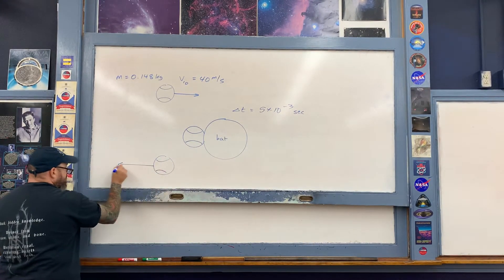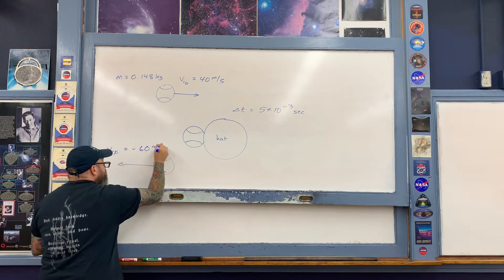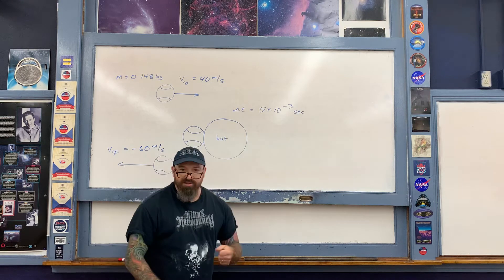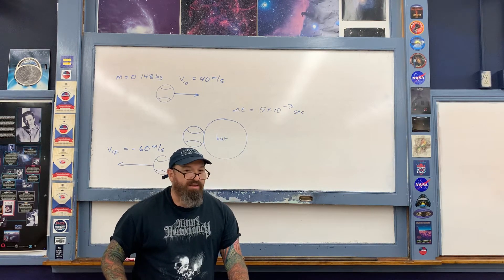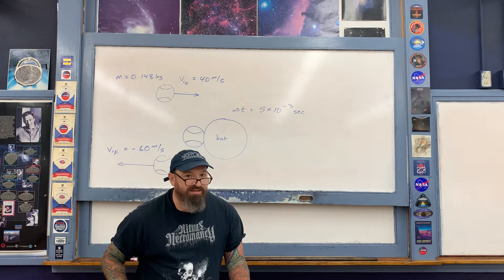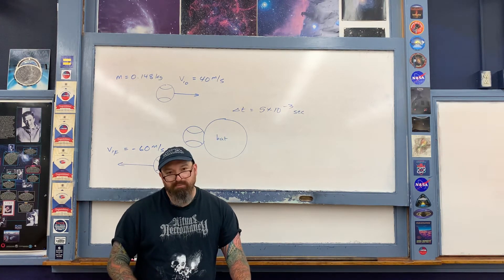After the ball leaves the bat, it has a final velocity in this direction, v₁ final, equal to negative 60 meters per second. It does say the ball reverses direction after colliding with the bat, therefore we have to write that vector as a negative number. This is an easy mistake to make in a basic problem such as this.